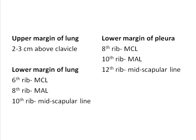The pleural reflections are a little lower, so you can add 2 ribs to the lower margin of the lung: that gives the 8th rib in the mid-clavicular line, the 10th rib in the mid-axillary line, and the 12th rib in the mid-scapular line, which gives you the outline of the pleura.